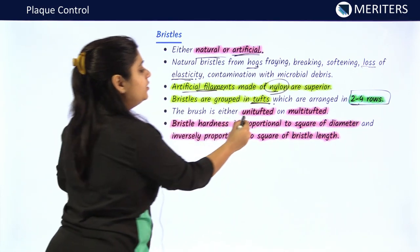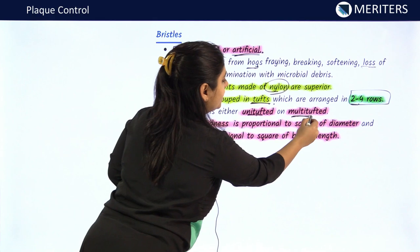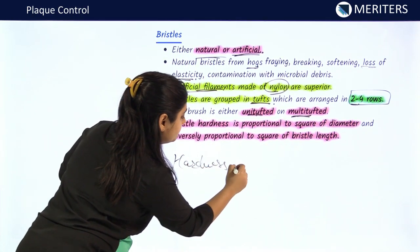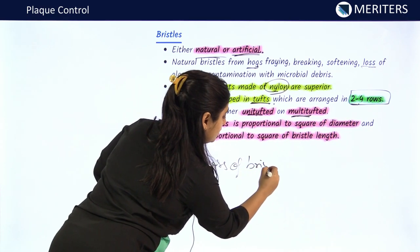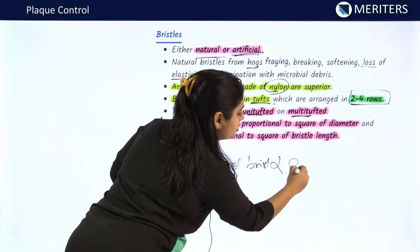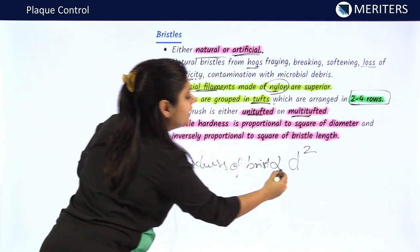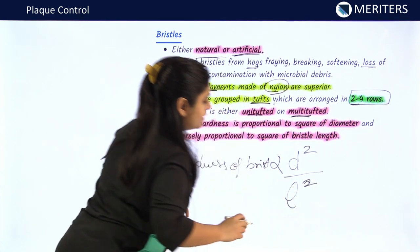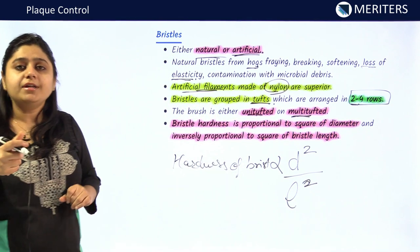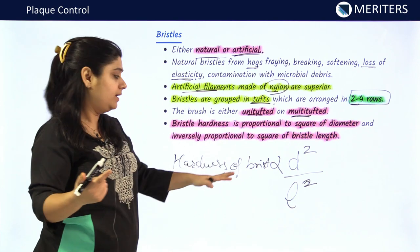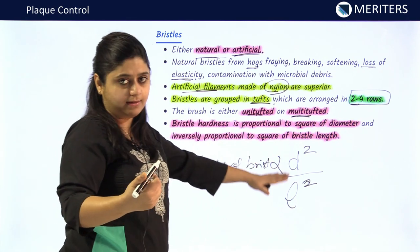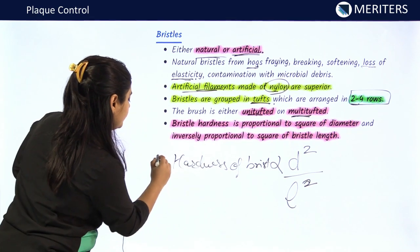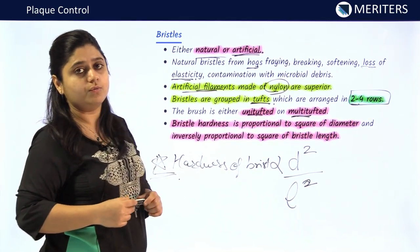The brush may be uni-tufted or multi-tufted. Regarding bristle hardness: hardness is directly proportional to the square of the diameter of the bristle and inversely proportional to the square of the length of the bristle. This means if the diameter increases, hardness increases; if the length increases, hardness decreases. This is important and may be asked in MCQs.